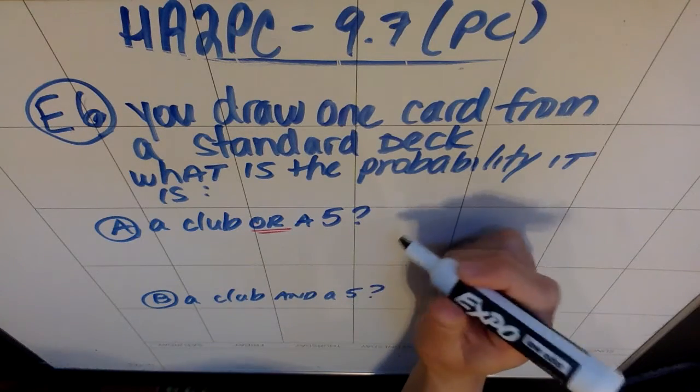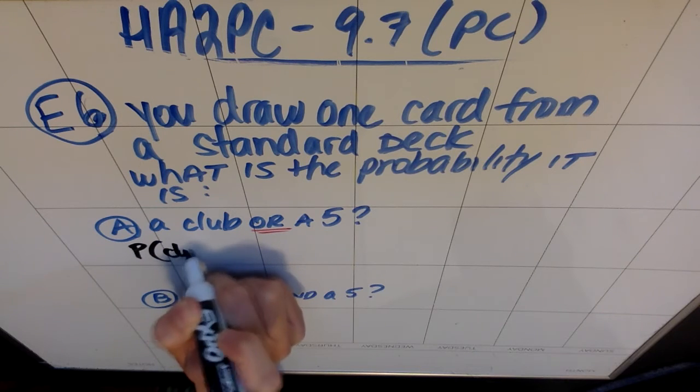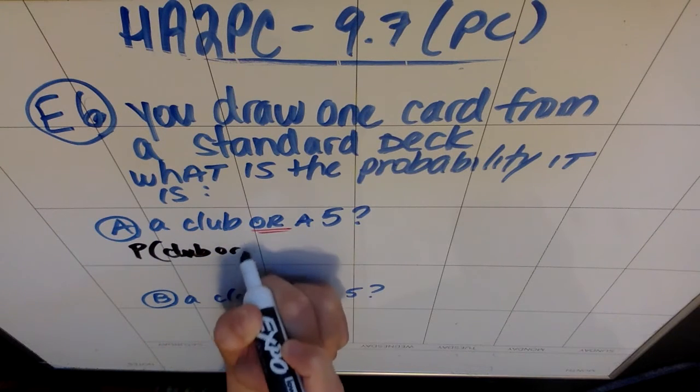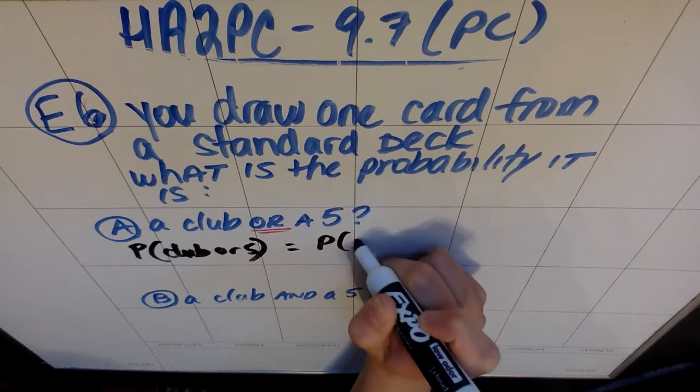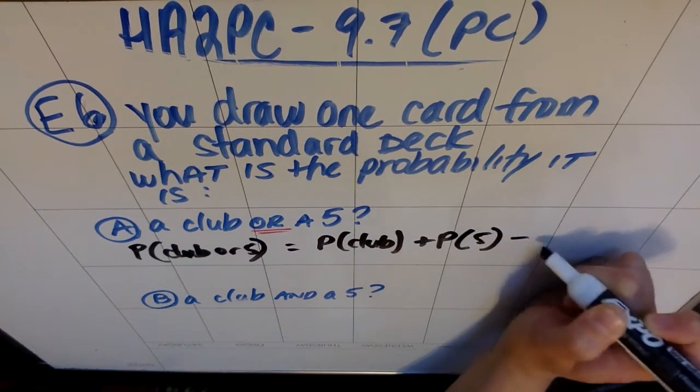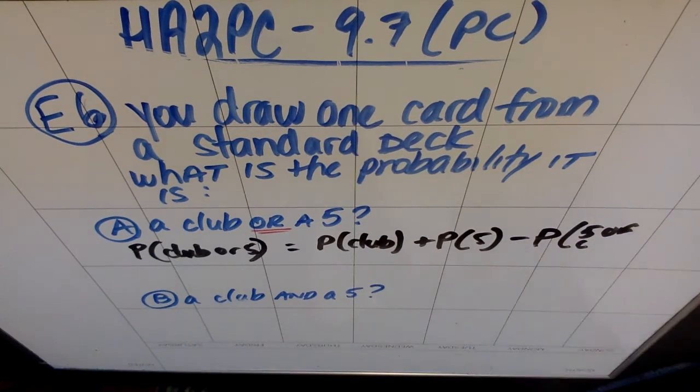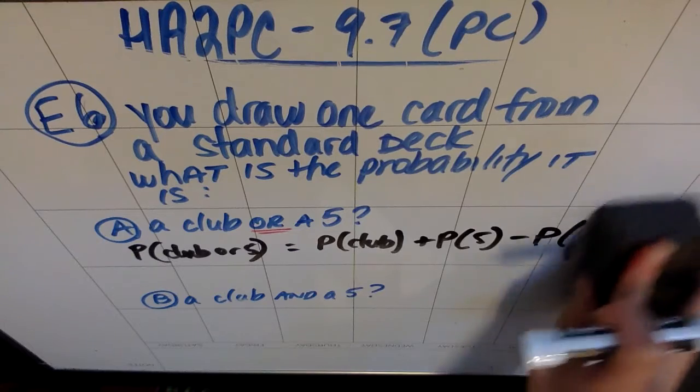One is to just logic through it, and the other way is to use a formula. So the probability that we have a club or a 5 is the probability that it's a club plus the probability that it's a 5 minus the probability that it is the 5 of clubs.